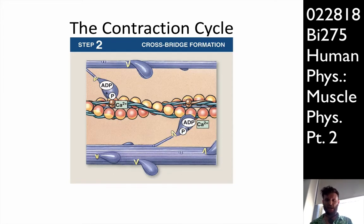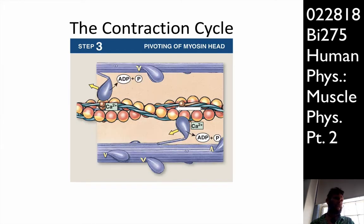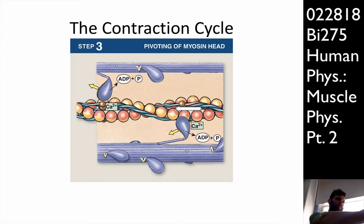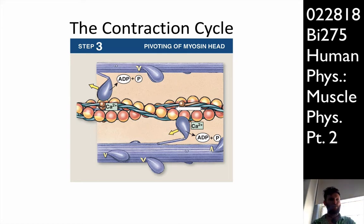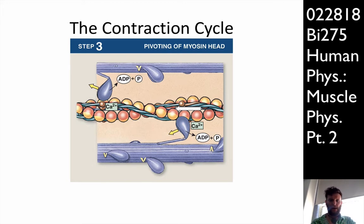As that crossbridge is formed, the interaction between actin and myosin triggers the release of ADP and inorganic phosphate from the previous ATP that had bound to the head group. The ADP is like the stopper in a door jam keeping a spring-loaded door open. That gets pulled out, and the hinge region of the myosin is now free to release the pent-up energy it has. And we have an actual contraction.